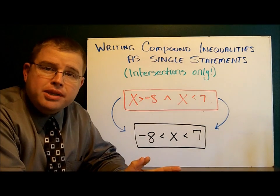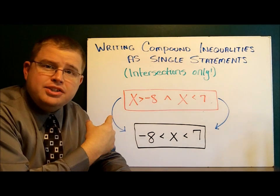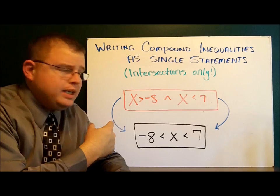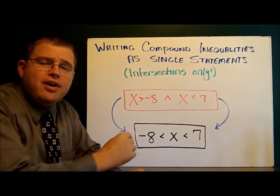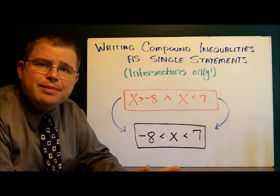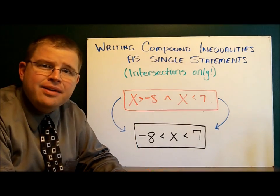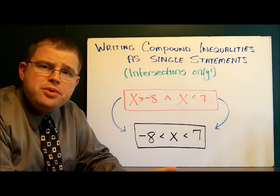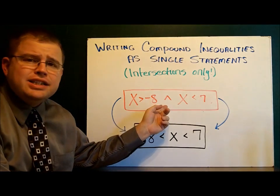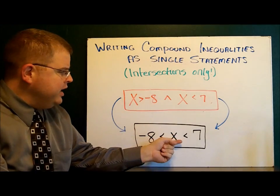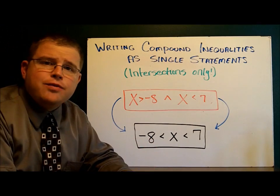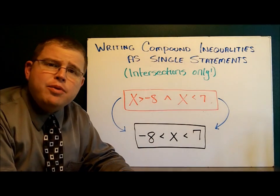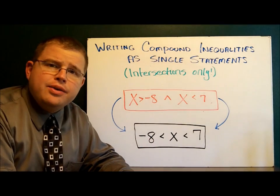You may find it hard to believe, but these two inequalities — this one and this one — are actually the same exact set. Whenever you have an intersection, you can easily rewrite it so it has this nice compact format. And I'm going to show you how to do that.